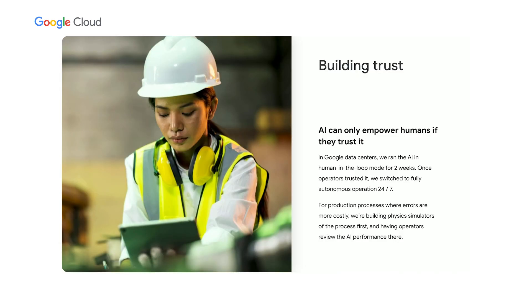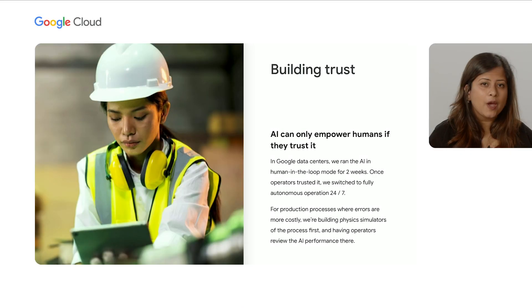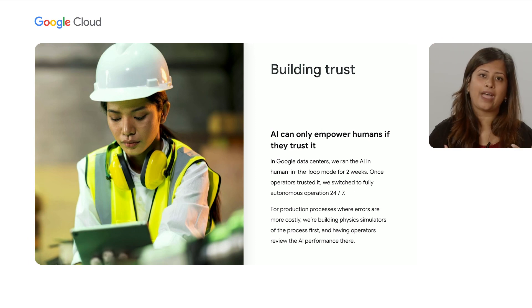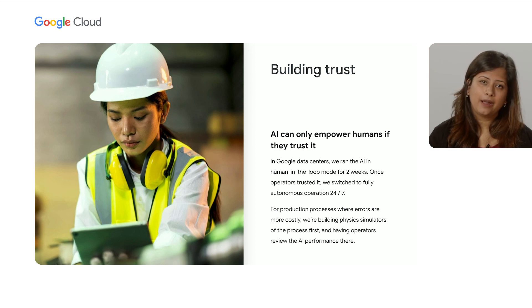How many of us know of an organizational change that failed because the people were not sufficiently bought into it? This is why, as we get closer to deployment, we place a heavy focus on creating user trust. We do this by running the AI with a human in the loop for a few weeks so that the operators can grow comfortable with how the AI is performing and even give us feedback. Additionally, we've built simulations for industrial processes to mimic how AI would impact them so that operators can view those results — this virtual approach is particularly useful for processes where errors are more costly.